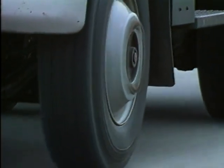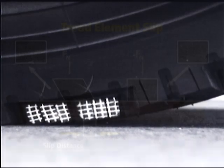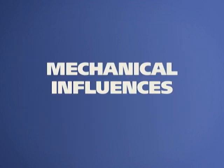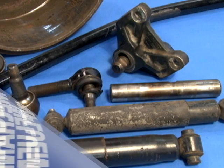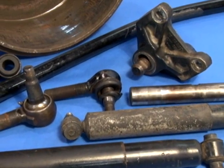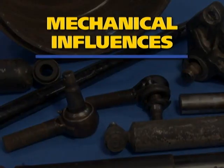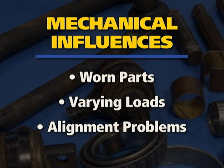While this is occurring, the face of the tread is still in contact with the road surface. The tread's surface is allowed to slide on the road, which in turn creates wear. Engine torque and braking forces further aggravate this wear effect. The rubber will also distort and wear as a result of mechanical inputs from the vehicle. The source causing this wear may be worn parts, varying loads, or alignment problems.